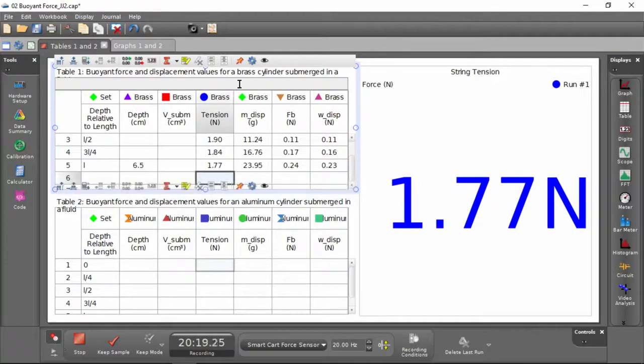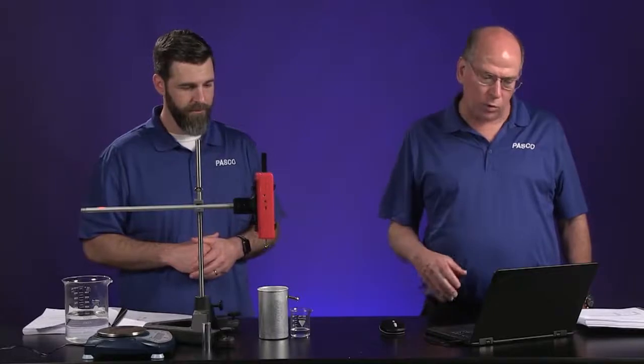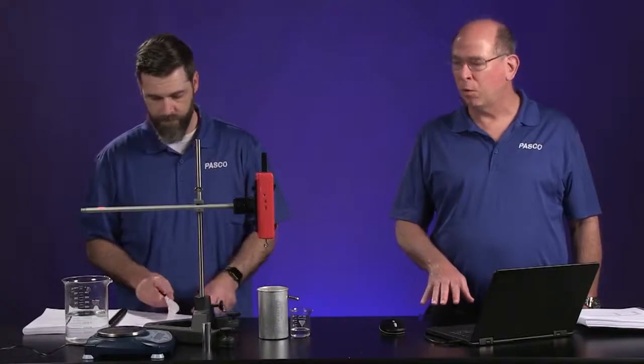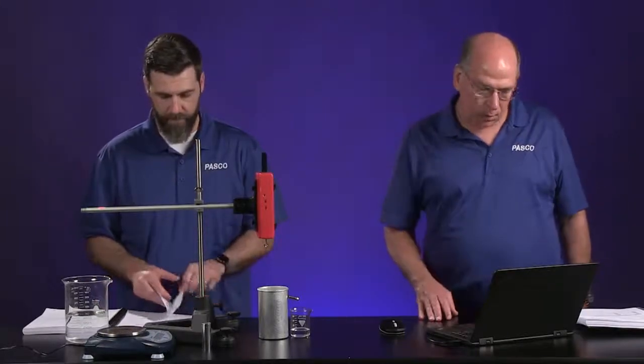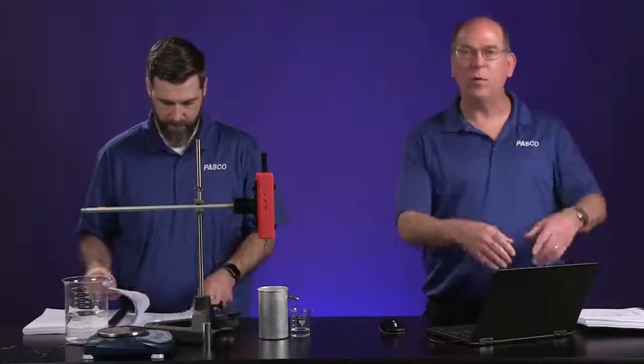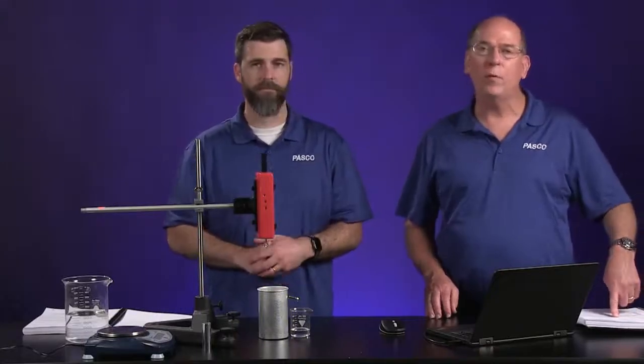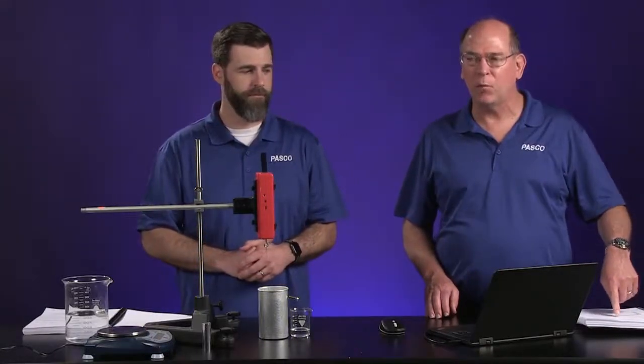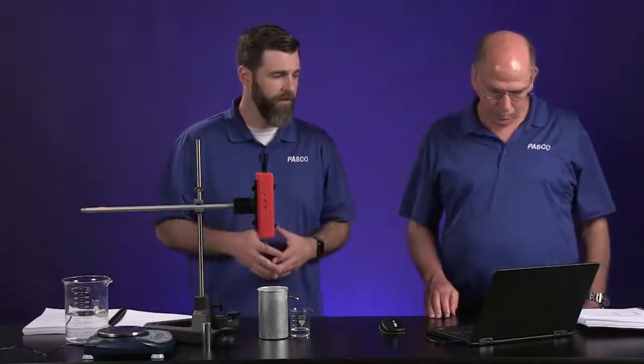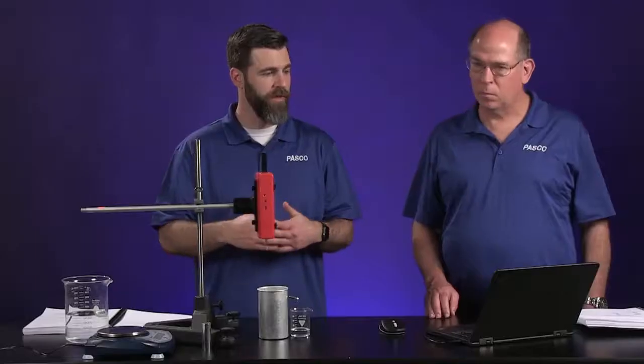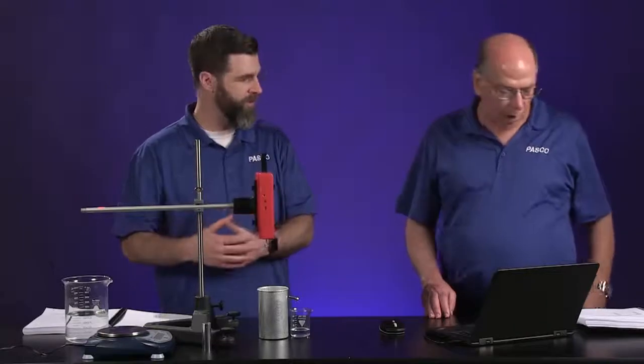The remaining things in this data table include figuring out the volume that's submerged. So now the entire thing is submerged and you know its length and it's a cylinder, but you also would need to know the radius. We're going to tell you the radius here. There's not a place in the data table, but the radius of the cylinder is 1.17 centimeters, so you need to know that to be able to figure out the volume. Once you know the volume of the whole cylinder, it's just some easy math to figure out what the volume is when you had a quarter of it, a half of it, and three quarters of it submerged.